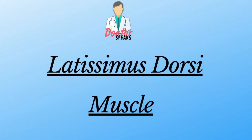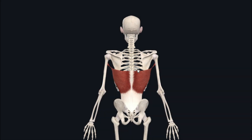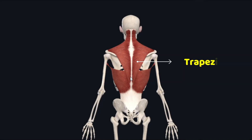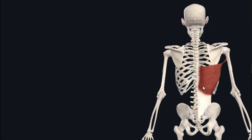Hello, welcome back. Today we will study an important superficial extrinsic muscle of the back: the latissimus dorsi muscle. This large fan-shaped muscle is partially covered by the trapezius muscle. The latissimus dorsi is a superficial extrinsic muscle of the back, and while anatomically a muscle of the back, functionally it is a muscle of the upper limb.